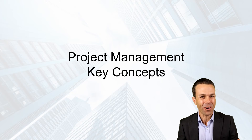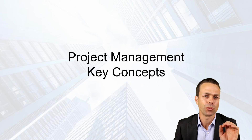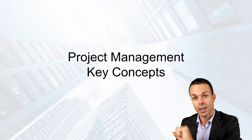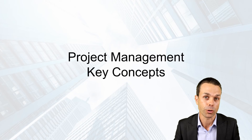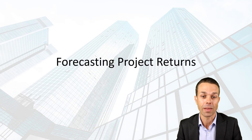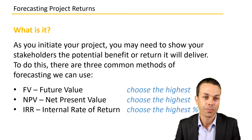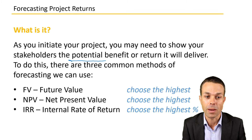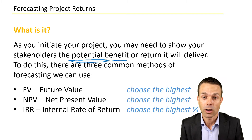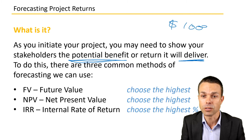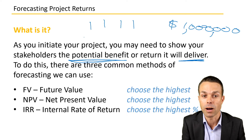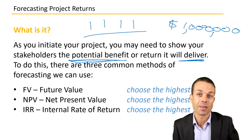Welcome back to this series of key concepts from the Project Management Body of Knowledge. This topic looks into forecasting and figuring out whether to spend money on a particular project. It gets into the meat of things before you kick off or initiate your project. As you initiate, you may need to show stakeholders the potential benefit — a million dollars, customer value, goodwill, or value over time. There are three common forecasting methods you'll see on the PMP exam.